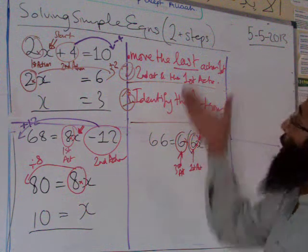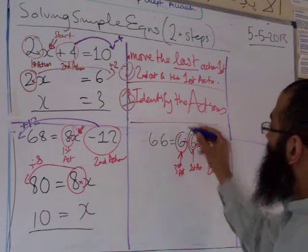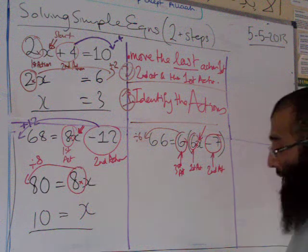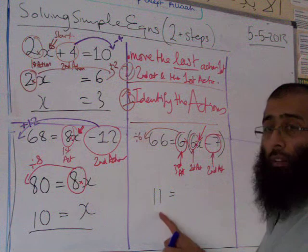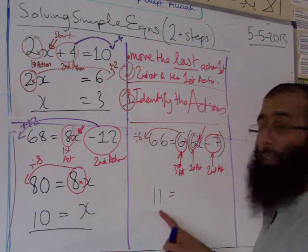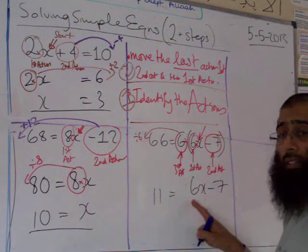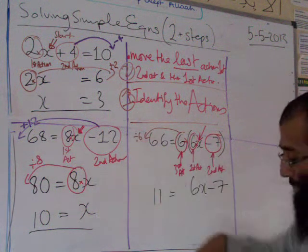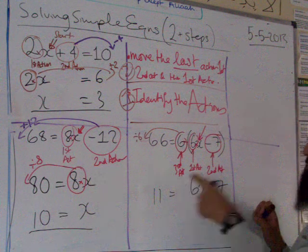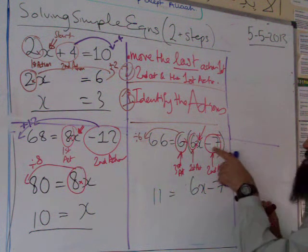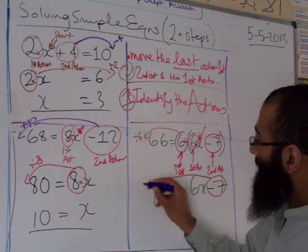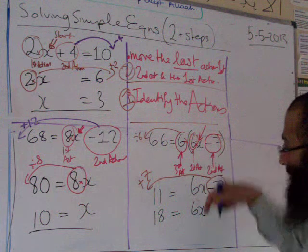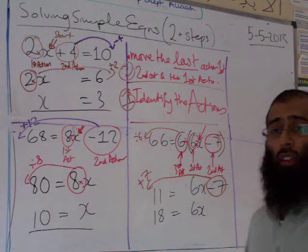Algebra is not difficult — it's only as difficult as your teacher makes it. So which action do we move first? The last action — times by six on the outside. Opposite of times by six is divide by six. 66 divided by 6 equals 11. Copy down 6x minus 7 equals 11. The outside six is gone — dealt with.